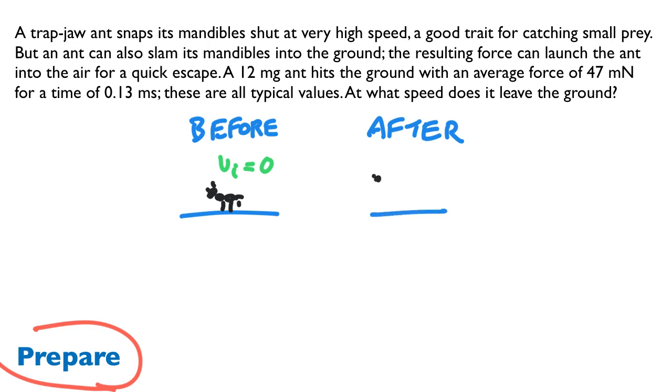That is what we're trying to find out. We can compute the original momentum. The initial momentum is equal to 0. The final momentum of the ant is just equal to the mass of the ant times Vf. That's our preparation step. We got our before and after picture.